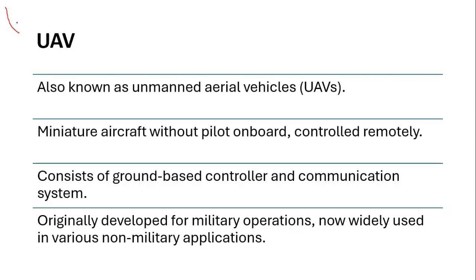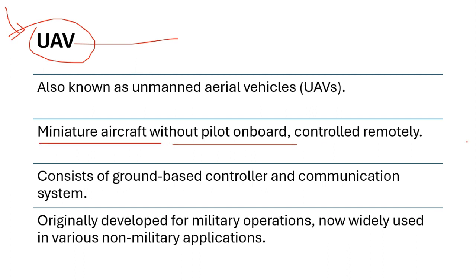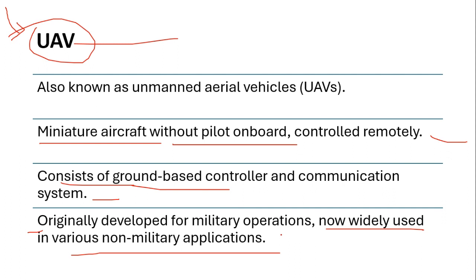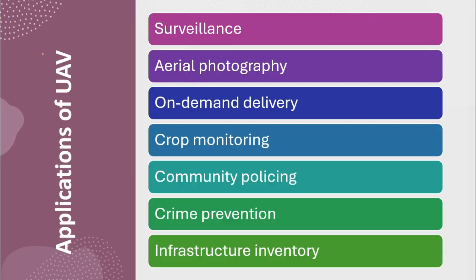UAV (Unmanned Aerial Vehicle) is another trend in geoinformatics. It is a miniature aircraft without a pilot on board, controlled remotely, and consists of a ground-based controller and communication systems. Originally developed for military operations, it is now widely used for non-military applications like village mapping under India's Swamitva project. Applications of UAV include surveillance, aerial photogrammetry, on-demand delivery, crop monitoring, community policing, crime prevention, and infrastructure inventory.